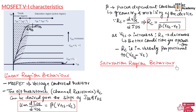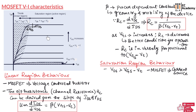Next, let us understand the saturation region behavior. The condition for saturation region is VDS should be greater than VGS minus VT. In this region, the MOSFET behaves like a current source. As you can observe in the VI characteristics, the drain current becomes constant in the saturation region. Hence, the drain current is independent of the voltage VDS — even though the voltage increases, the current remains constant.